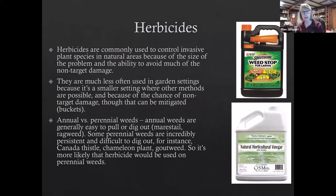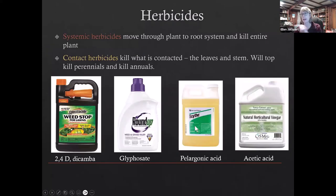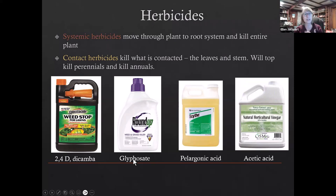Unless you're willing to go to an herbicide to control those perennial weeds, often your only hope is to dig out all of the soil, sieve out all of the rhizome fragments, and then replace the soil. I've pictured a couple of herbicides here — weed control for lawns, crabgrass killer, and natural horticultural vinegar. Let's talk a little more about herbicides now. I've got four herbicides pictured: weed control for lawns, which is a mix of 2,4-D and dicamba; Roundup with active ingredient glyphosate; Stive from Dow with pelargonic acid; and natural horticultural vinegar with acetic acid.